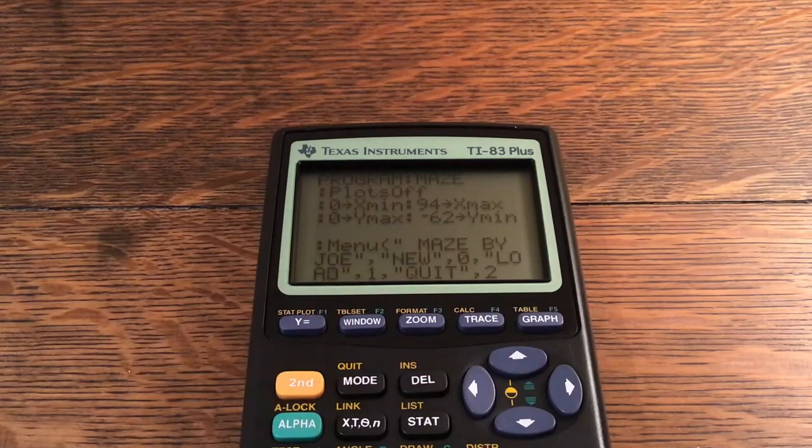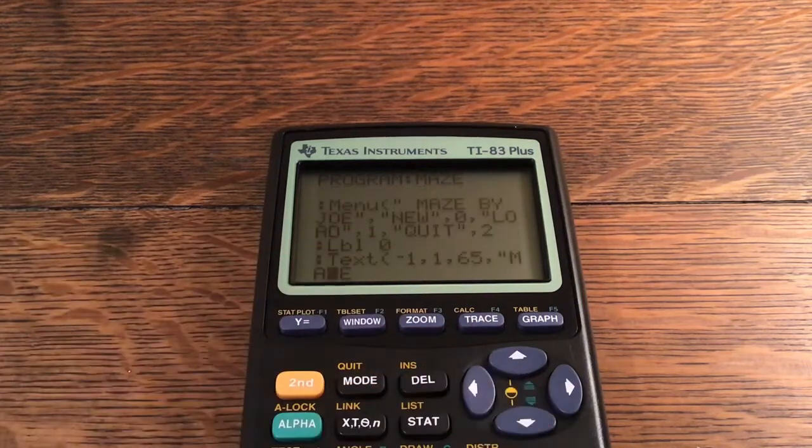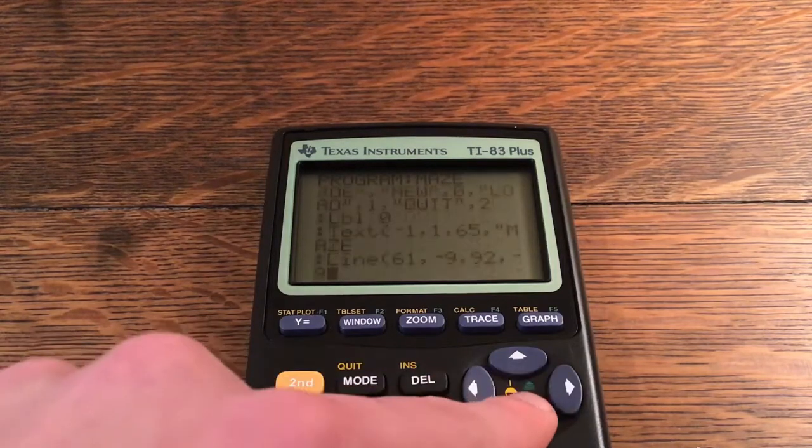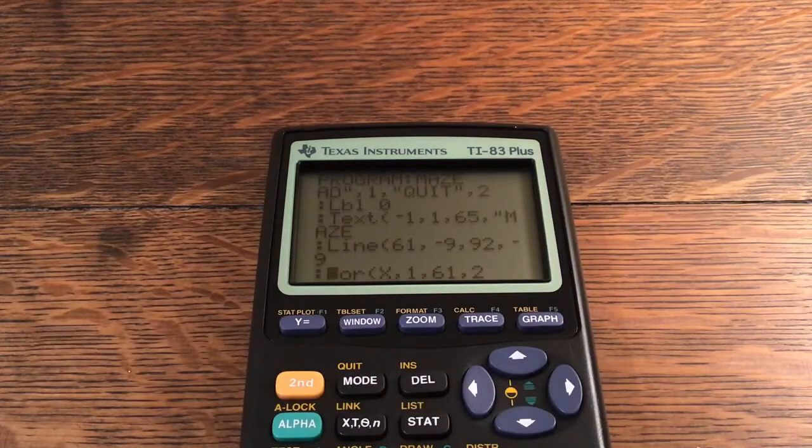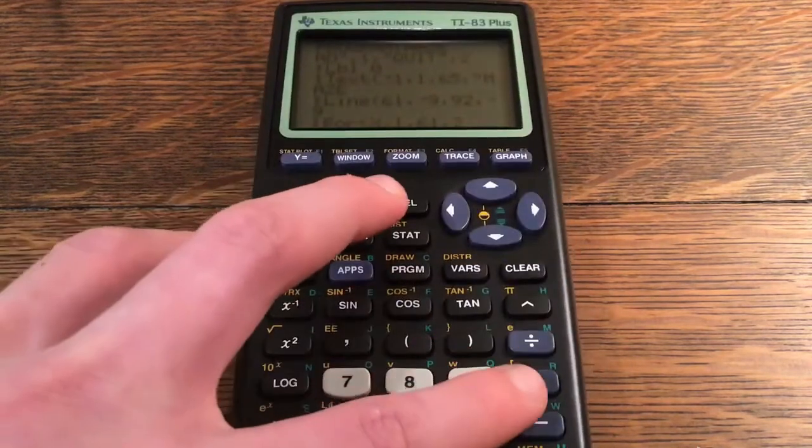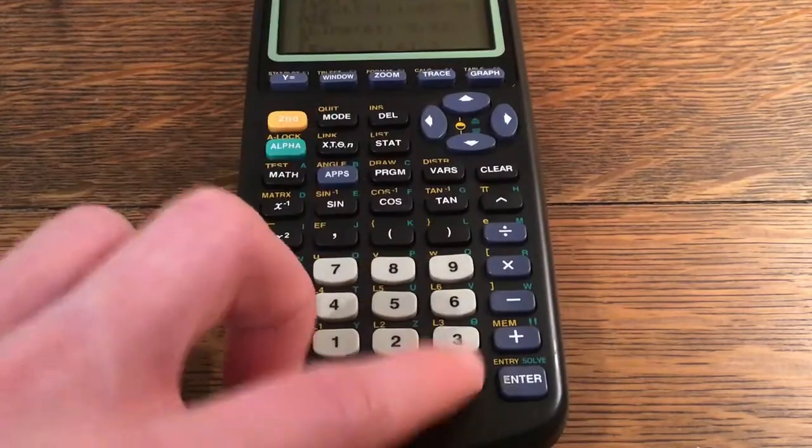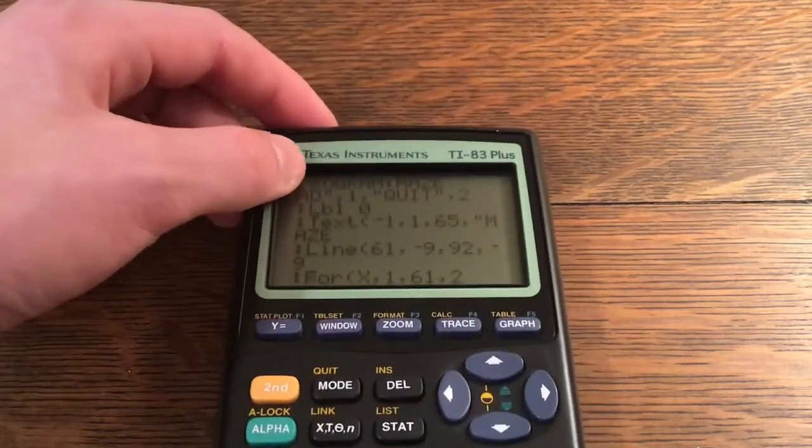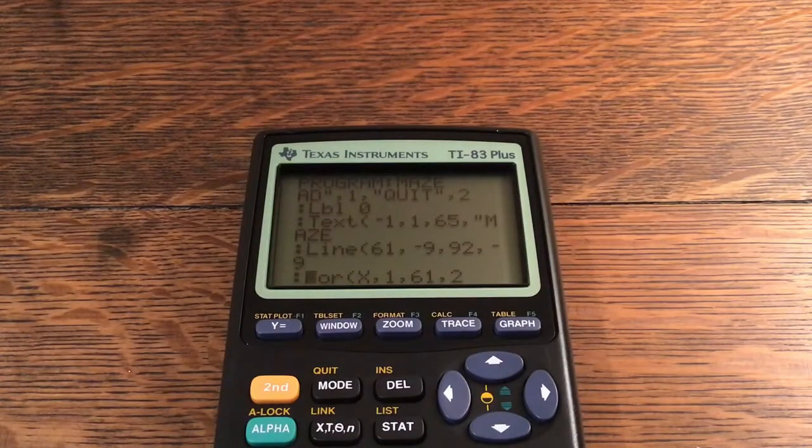Okay, so Menu space right there, then Maze by Joe, New is 0, Load is 1, and Quit is 2. Label 0, Text at -1,1,65, quote Maze, Line at 61,-9,92,-9, and remember do not use minus, use the little negative in parentheses here, otherwise you will get an error. For X,1,61,2, Line at X,-1,X,-61.